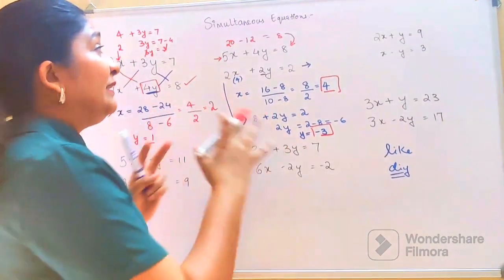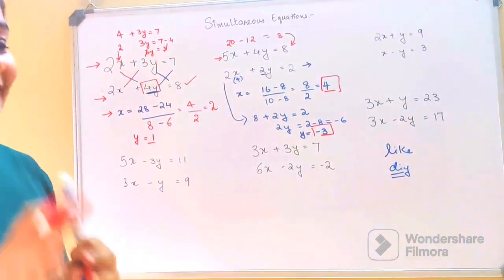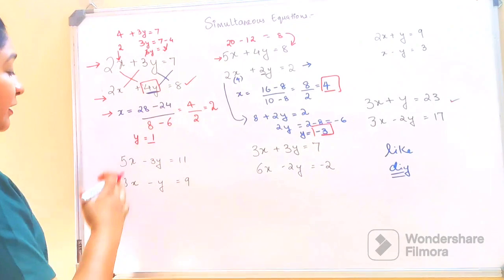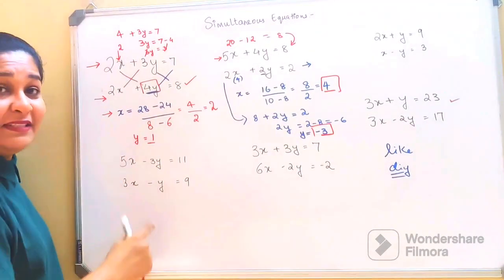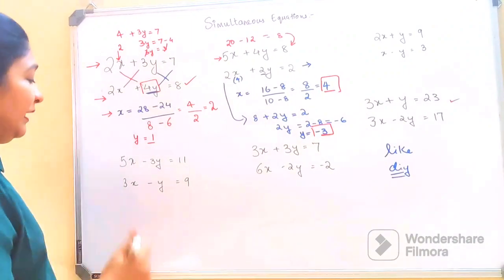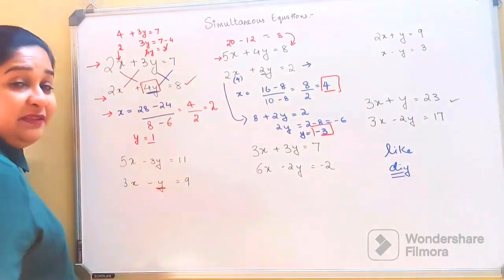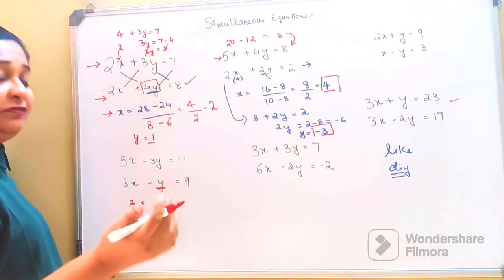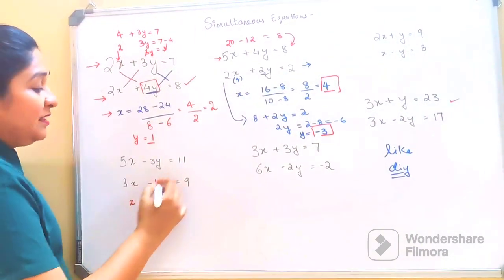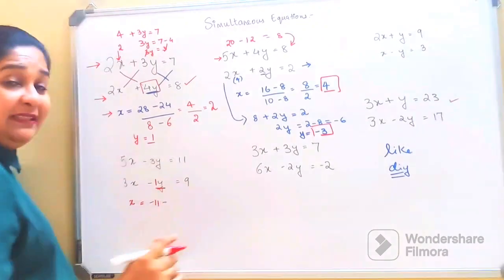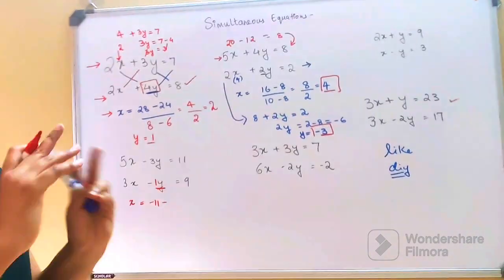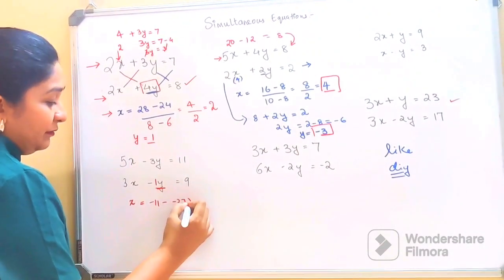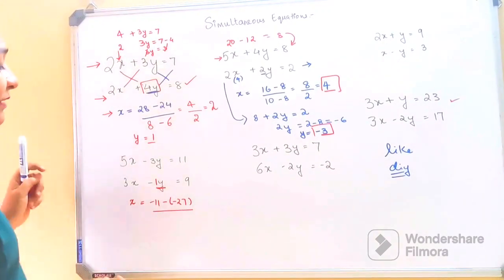I hope you're getting the hang of these simultaneous equations. You can take a pause and try the next one yourself, or we'll continue and see how to handle negative signs in both equations. Here again for x: whenever there's no coefficient, it's obviously a coefficient of 1. So minus 1 into 11 gives minus 11, then we put the minus sign, and 9 into minus 3 gives minus 27.